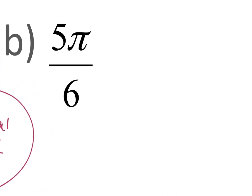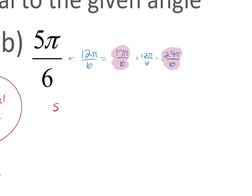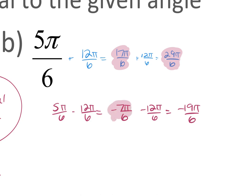For example B, to find positive coterminal angles I add 2π, which is 12π/6, to get 17π/6, then add again to get 29π/6 — those are my two positive coterminal angles. For negative ones, I subtract 12π/6 to get negative 7π/6, then subtract again to get negative 19π/6 — those are my two negative coterminal angles.